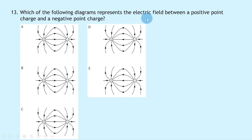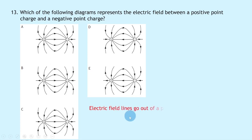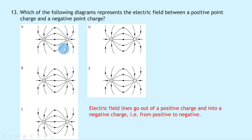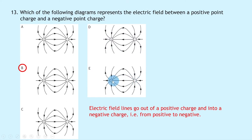Question 13 asks which diagram represents the electric field between a positive and a negative point charge. The rule is that electric field lines go out of a positive charge and into a negative charge. Option A incorrectly shows field lines going out of the negative and out of the positive. Option B correctly shows lines going from positive to negative with field lines into the negative and out of the positive. Options C, D, and E are incorrect. The answer is B.